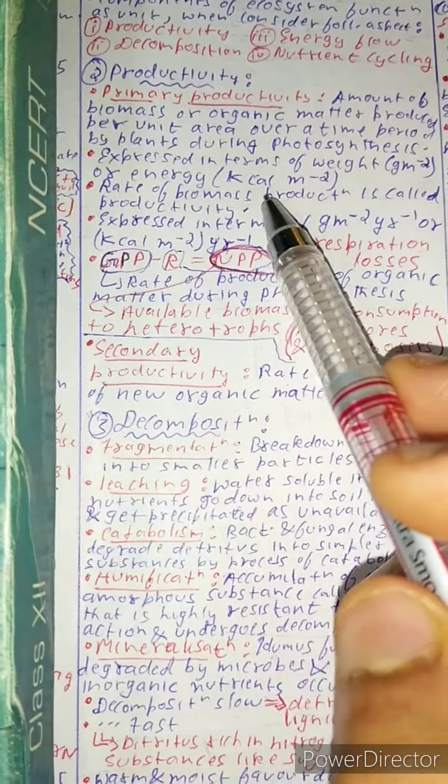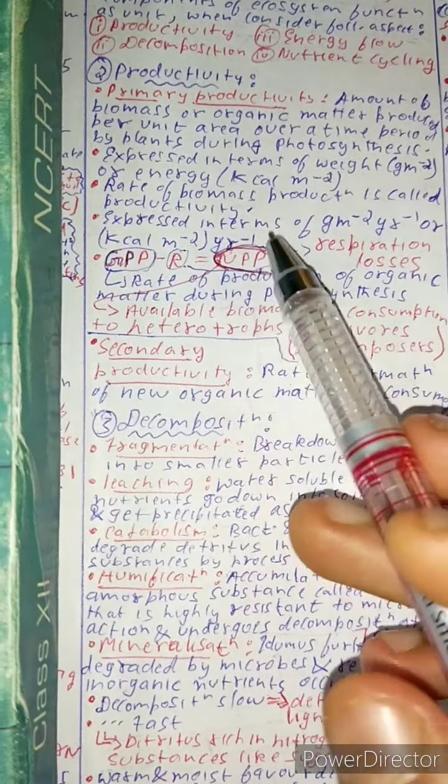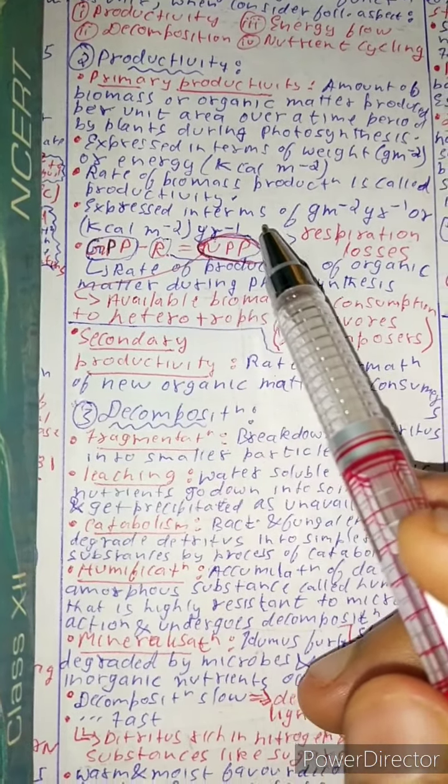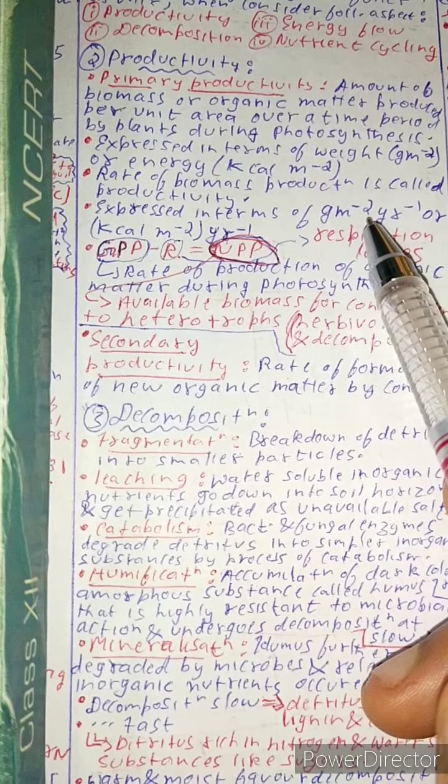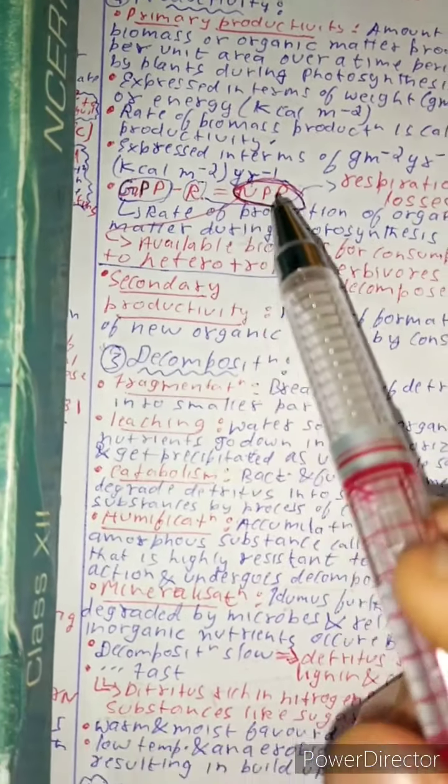It is expressed in terms of weight, that is gram per meter square or kilocalorie per meter square. Now the rate of biomass production is called productivity. It is expressed in terms of gram per square per year or kilocalorie per meter square per year.